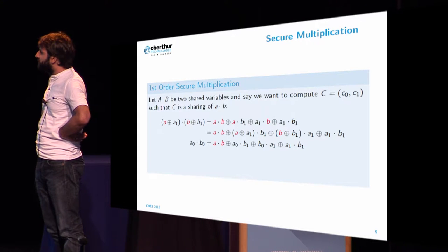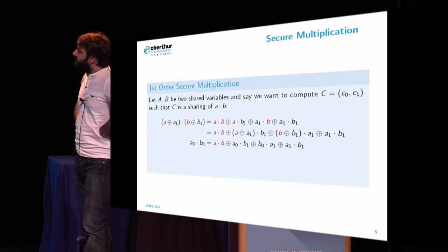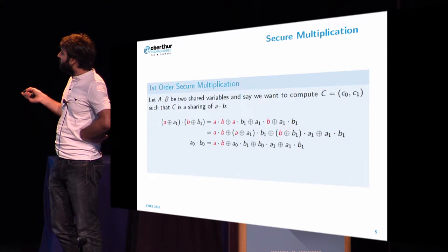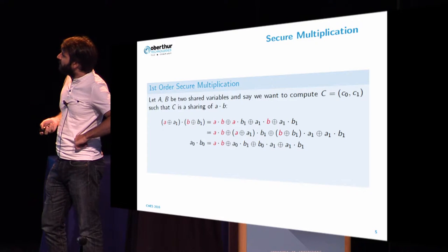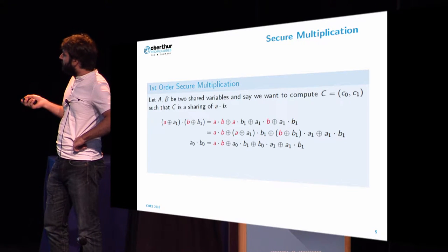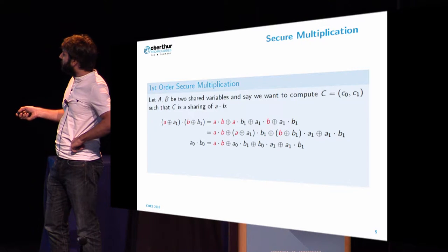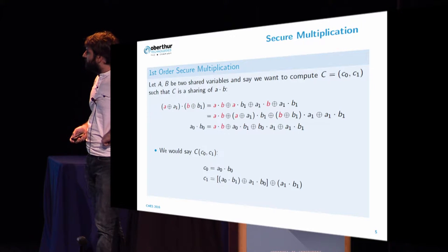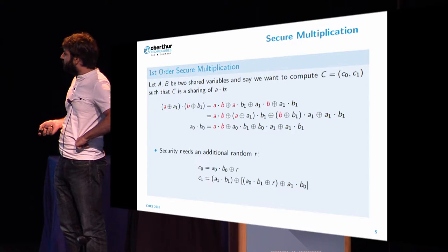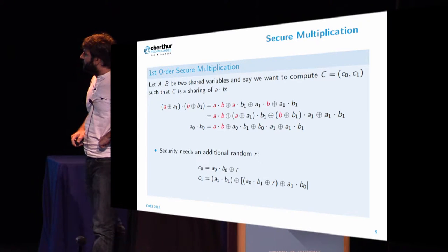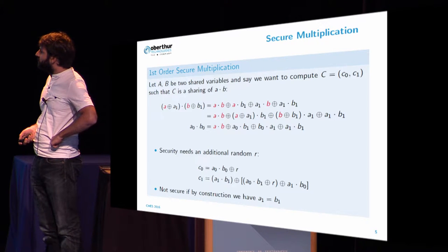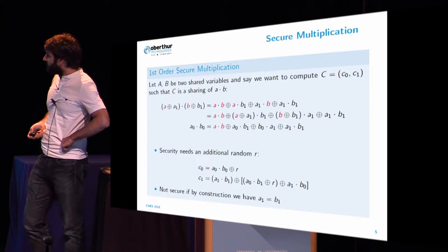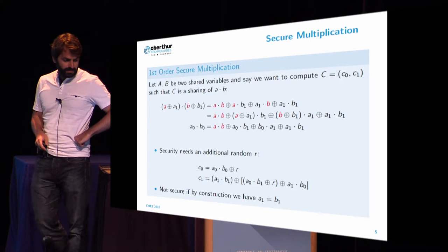So now we have defined our context. Let's go back to our problem of improving multiplications. First, in the first order case, this is how we can compute a shared variable C from A and B. This is the proof. In theory we can define C0 as A0 times B0 and C1 as this value. But this is in theory, and in practice we need some fresh random in order to evaluate C1 securely. And there is another restriction in the computation at the first order. We cannot have A1 and B1, which are the masks, set equally. They have to be independent.